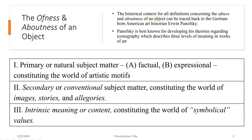One thing I want to make note of is the ofness and aboutness of an object. Ofness — what Panofsky was referring to — is what the object is made of, basically. It's a description. And the aboutness means words are applied to an object to describe what the object is about.